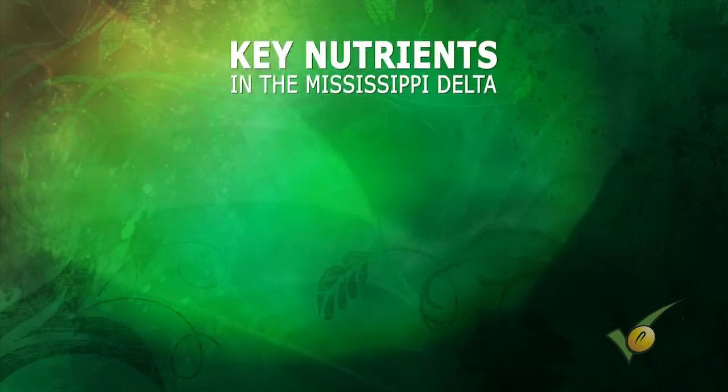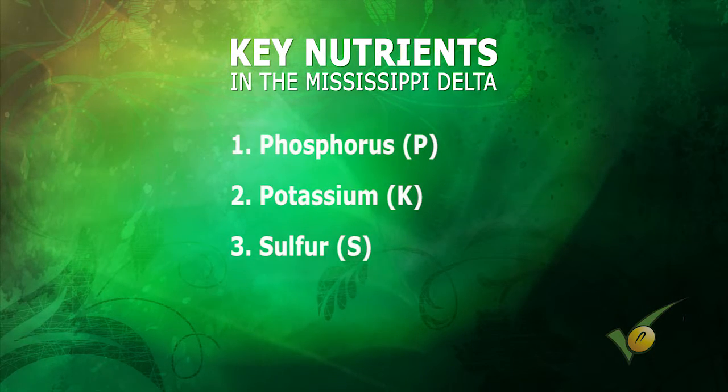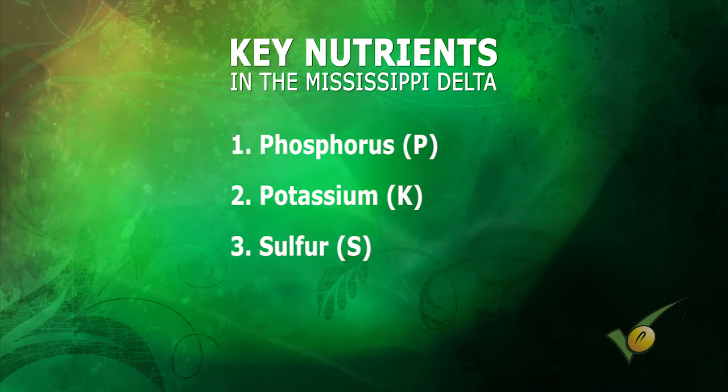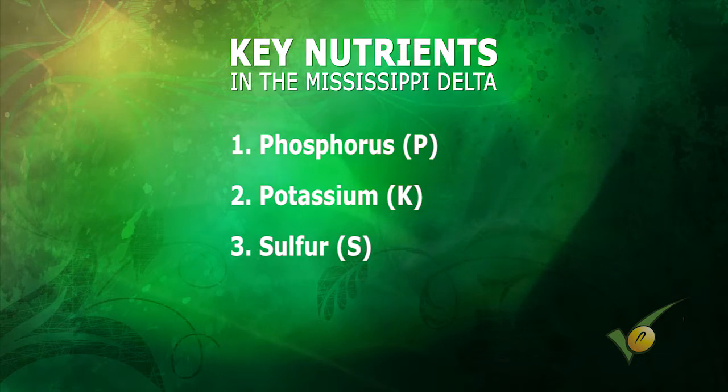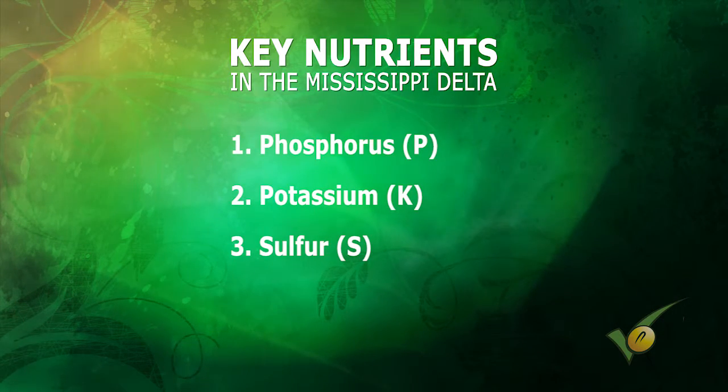The key nutrients here in the Mississippi Delta for better soybean fertility start with phosphorus and potassium, and probably third is going to be sulfur. As our environment has cleaned up with the Clean Air Act over the last 30 years, we're not getting a lot of the free sulfur we previously got from atmospheric deposits — that now we must apply as fertilizer in a corn and soybean rotational system.